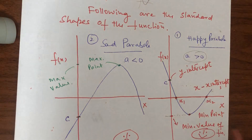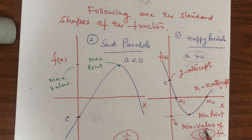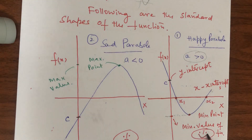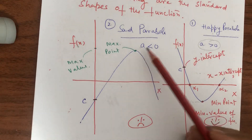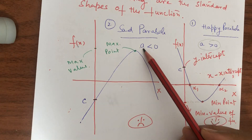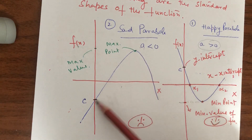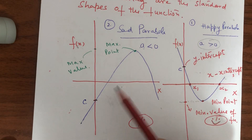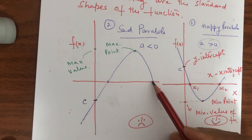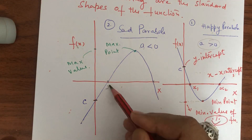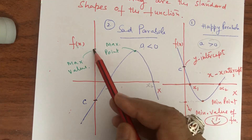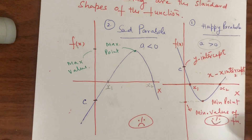The shape of the happy parabola is like a happy emoji. Similarly, when 'a' is negative it gives a sad parabola. The sad parabola also cuts the y-axis at some point, cuts the x-axis at two points x1 and x2, and instead of a minimum it has a maximum point and a corresponding maximum value.